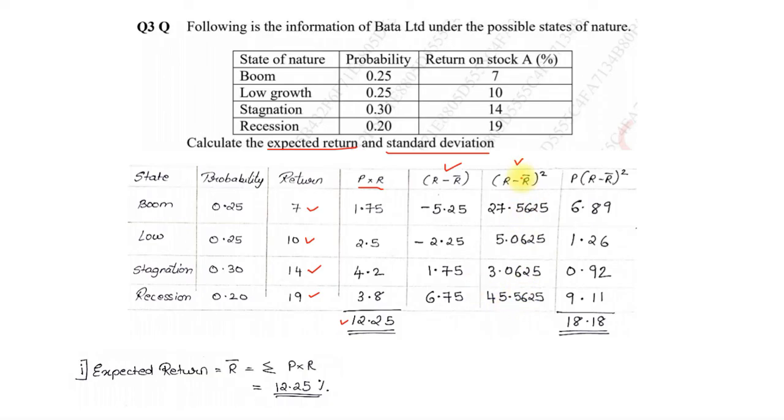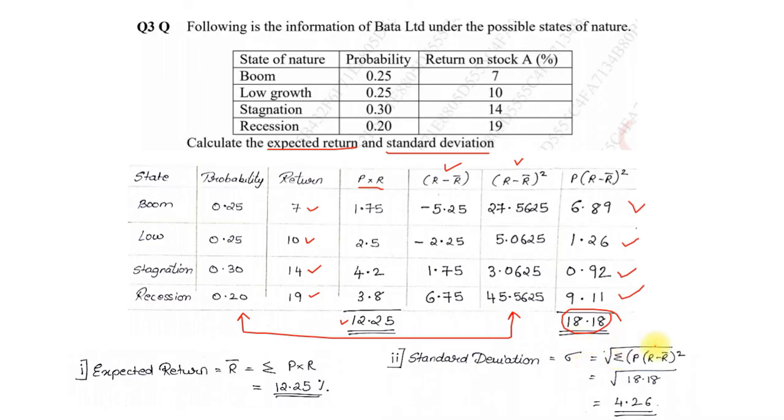Once you get that, last column will be probability multiply by R minus R bar the whole square. So it will be 0.25 into 27.5625, 0.25 into 5.06, 0.3 into 3.06, 0.2 into 45.5 odd. You multiply you get your final value 6.89, 1.26, 0.92, 9.11 and we need to total it. This total is nothing but the variance. So standard deviation is nothing but the root of variance. So the root of 18.18 is nothing but 4.26. So this is how you had to solve this particular sum which was based on expected return and standard deviation.